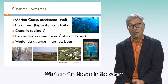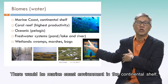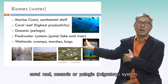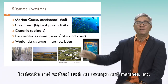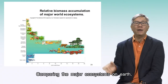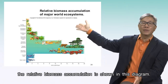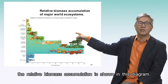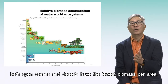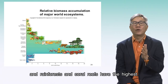What are the biomes in the water? There would be marine coastal environments in the continental shelf, coral reef, oceanic or pelagic — meaning migratory systems — freshwater, and wetlands such as swamps and marshes. Comparing the major ecosystems on Earth, the relative biomass accumulation is shown in this diagram. Both open oceans and deserts have the lowest biomass per area, while rainforests and coral reefs have the highest.